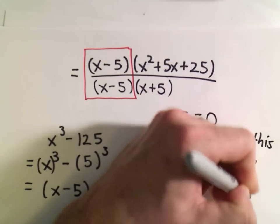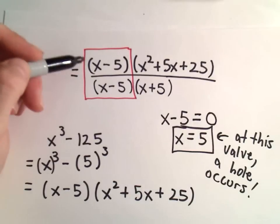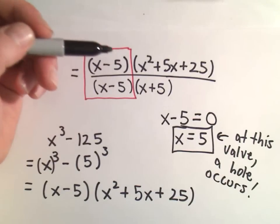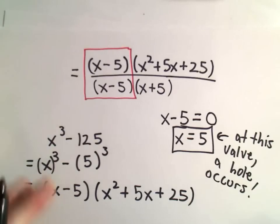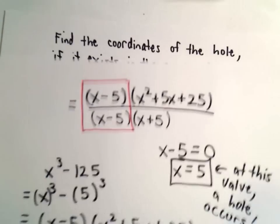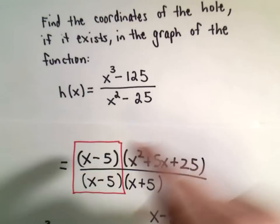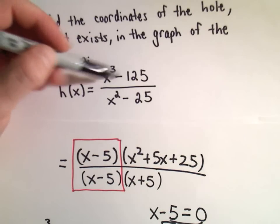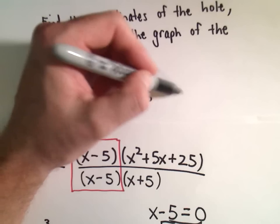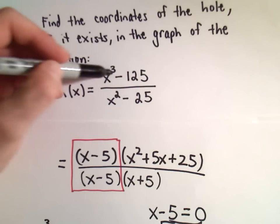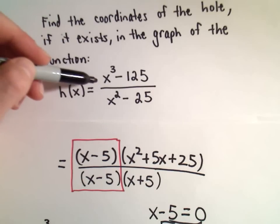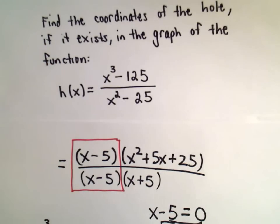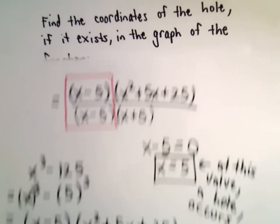There could be more common factors as well, depending on how things factor. And then you would have more holes in the graph as well. Another way to think about this, notice if you plug 5 in at the very beginning, if you plug 5 into the function, you would actually get 0 over 0. So any value of x that you put into a rational function that gives you 0 divided by 0, it's going to turn out that that produces a hole in the graph.